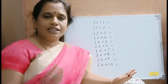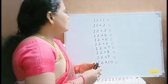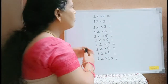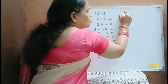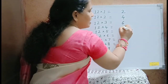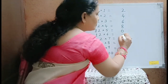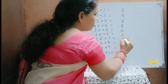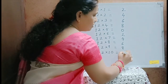Let me start with the table of 12. For the table of 12, for the unit digit, we have to write the even numbers starting from 2: 2, 4, 6, 8, 0. Again, the same numbers repeat: 2, 4, 6, 8, 0.